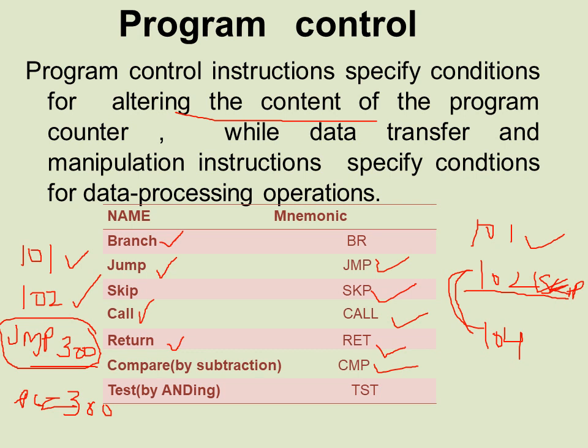For example, the program counter starts at 101. After running instruction at 101, the PC increments to 102, then 103. But when program control instructions are executed, they may change the address value in the program counter and cause the flow of control to be altered.